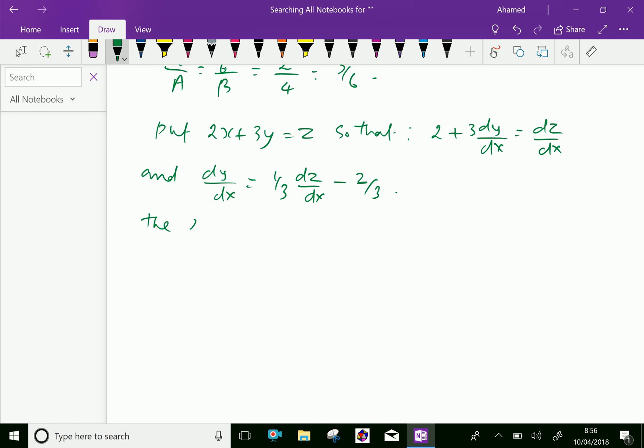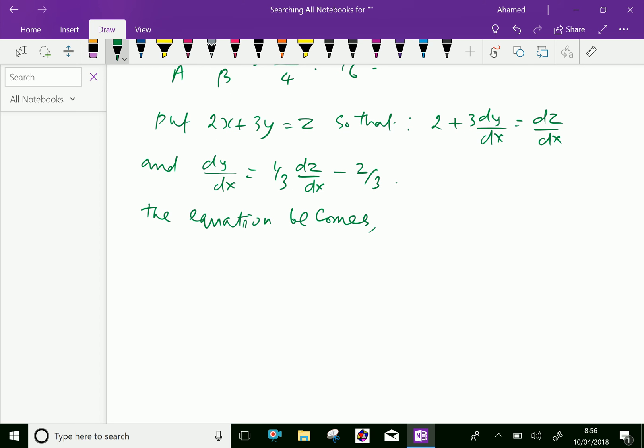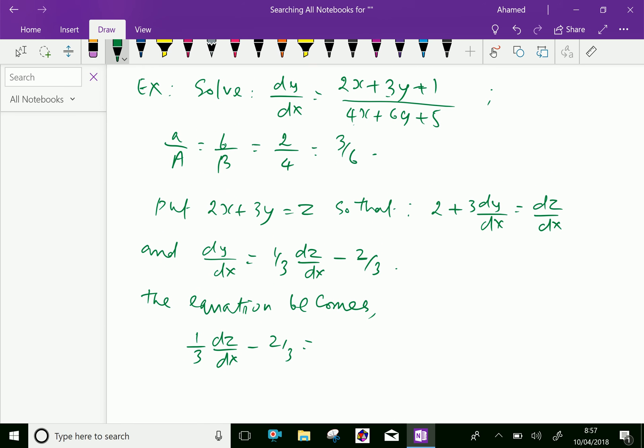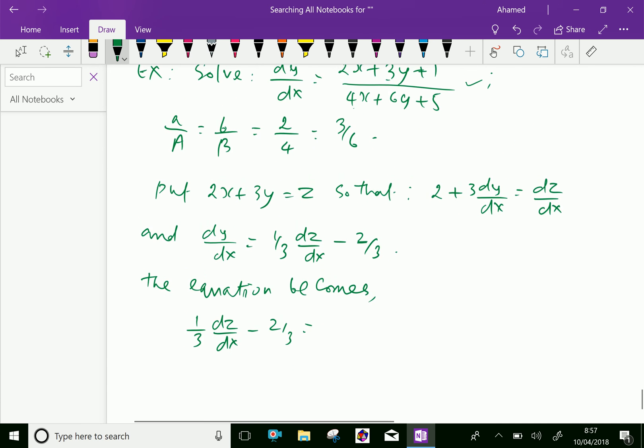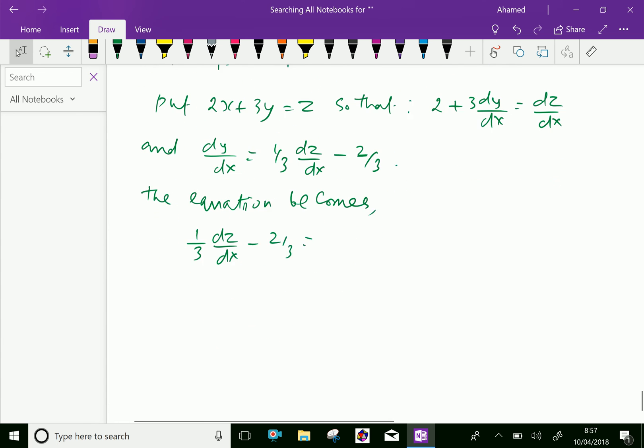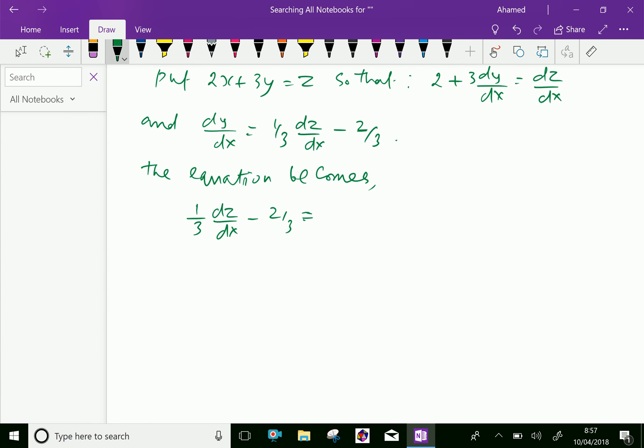Therefore, the equation becomes (1/3)(dz/dx) - 2/3 equals (z + 1) over (2z + 5). Because originally we have dy/dx equals (2x + 3y + 1) over (4x + 6y + 5). So substituting 2x + 3y equals z, it equals (z + 1) over (2z + 5).